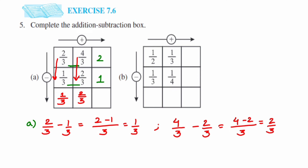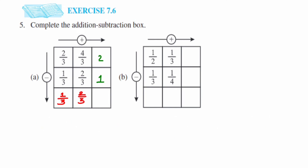Now for the second box. It contains 1/2, 1/3, 1/3, and 1/4. If you look, the denominators are not the same — these are unlike fractions. We start with addition: 1/2 plus 1/3. Since the denominators are different, we need to find the LCM of 2 and 3, which is 6.